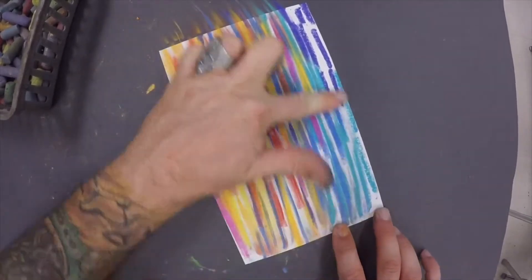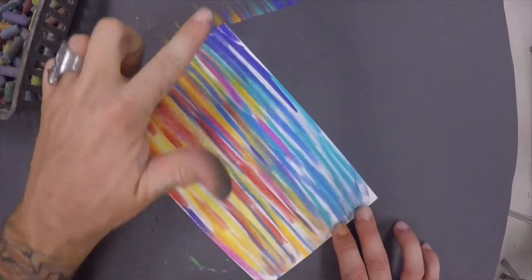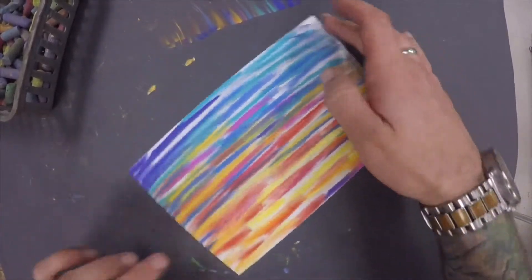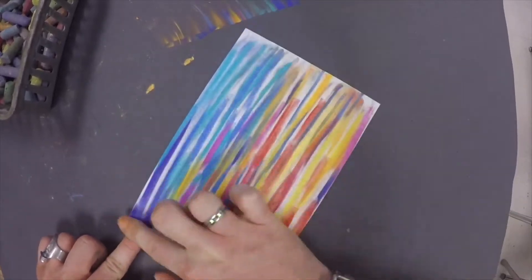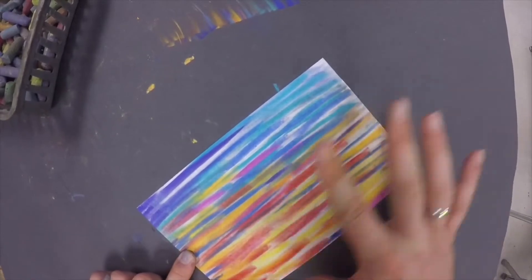Now the reason that I said that we want to put our brighter colors at the bottom and our darker colors at the top is because in a sunset, when we look at a sunset in nature, in the world around us, those brighter colors, those reds, yellows, pinks,